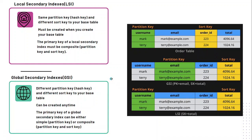Now let's understand the Global Secondary Index. A global secondary index is an index that has a different partition key and sort key from the base table. It is not bounded with the base table partition — we can say it does not share any structure with the base table; it will be totally different. It can be created anytime, unlike a local secondary index which must be created at the time of creating the base table. The primary key here could be either a composite primary key or a simple partition key.